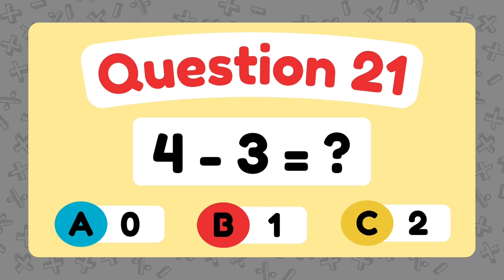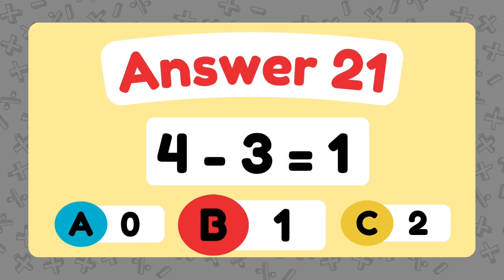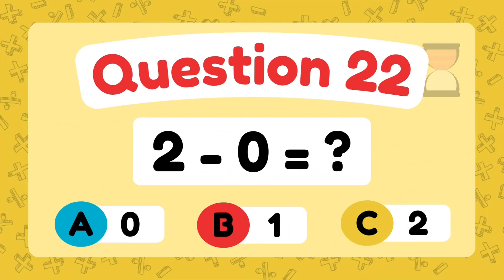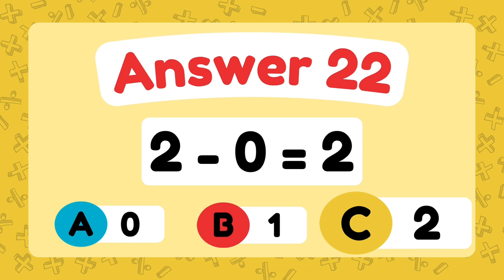What is 4 minus 3? The answer is 1. What is 2 minus 0? The answer is 2.